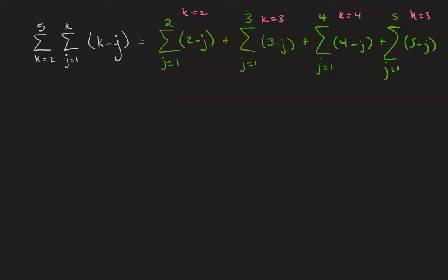Then we iterate each sum individually again. When j equals 1, 2 minus 1 is 1, 2 minus 2 is 0. 3 minus 1 is 2, 3 minus 2 is 1, 3 minus 3 is 0. 4 minus j is 3 when j is 1, 4 minus 2 is 2, 4 minus 3 is 1, 4 minus 4 is 0.